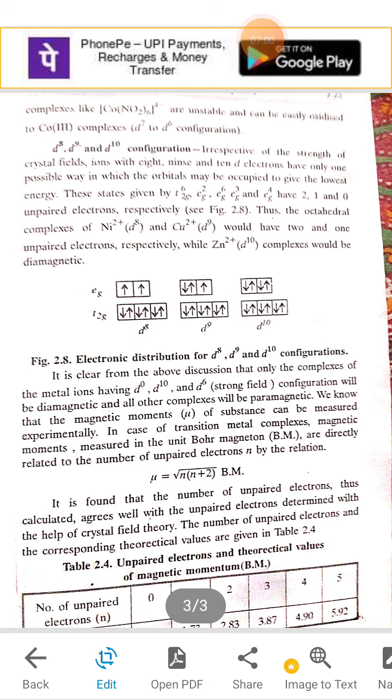The calculation of Bohr magneton or the magnetic movement depends on number of unpaired electrons. That is, mu is equal to under root n into n plus 2 BM.